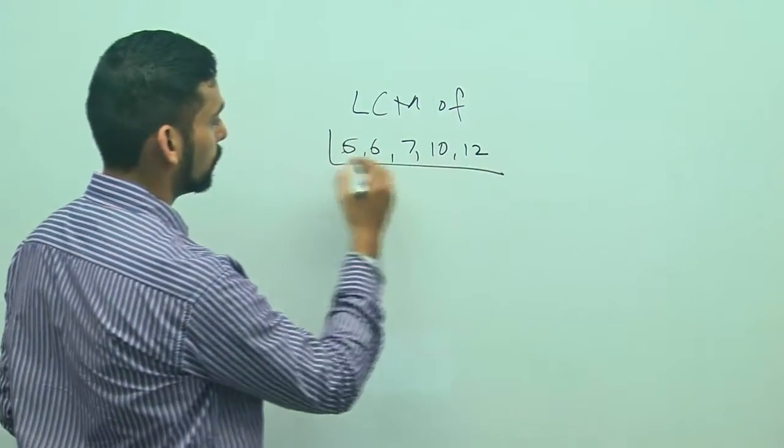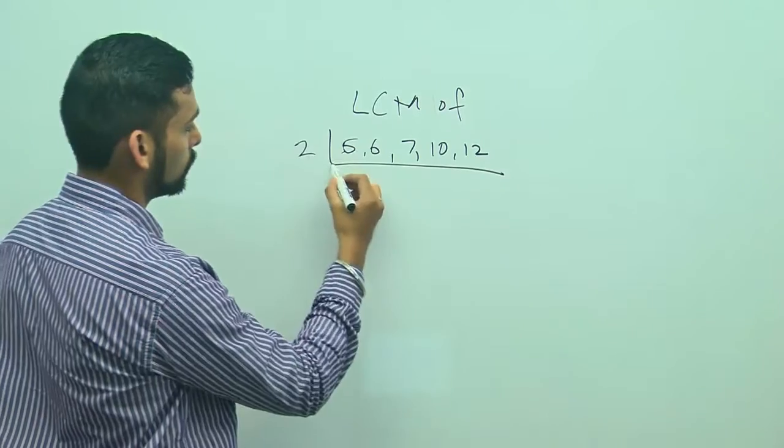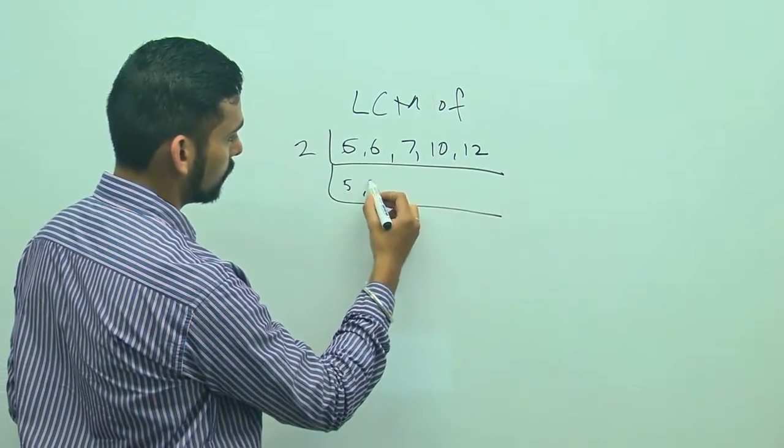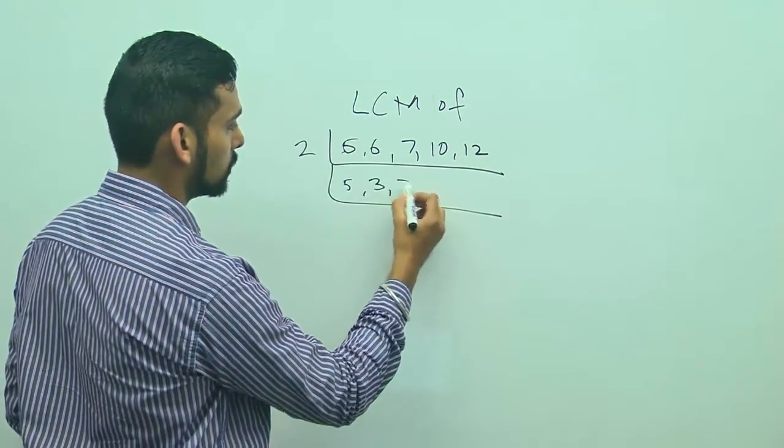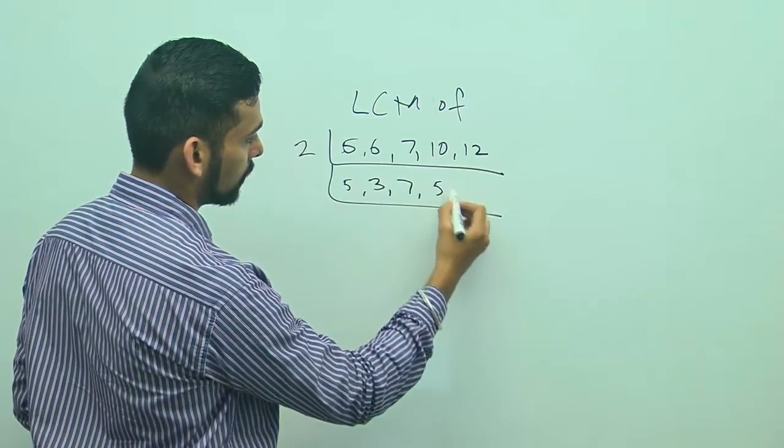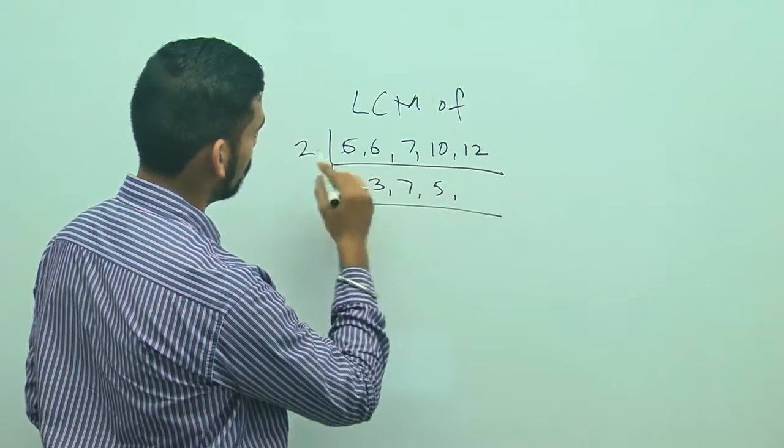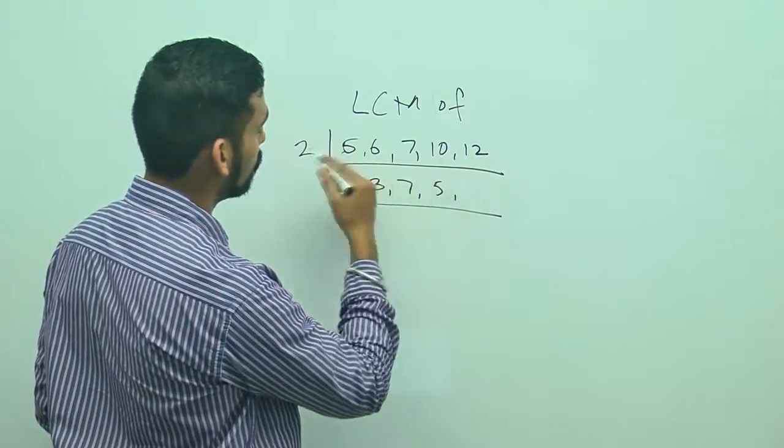I will take the LCM of 5, 6, 7, 10, and 12. I will see which factors go over here. First I will take 2, so 2 does not go into 5, stays at 5. 6 becomes 3, 7 stays as it is, 10 becomes 5, and 12 becomes 6.